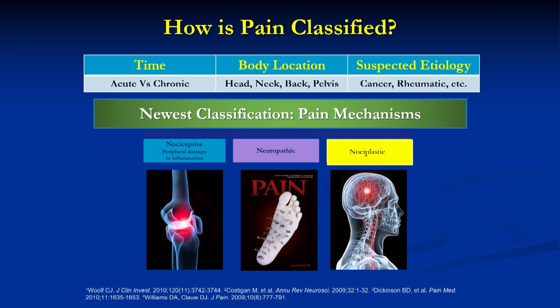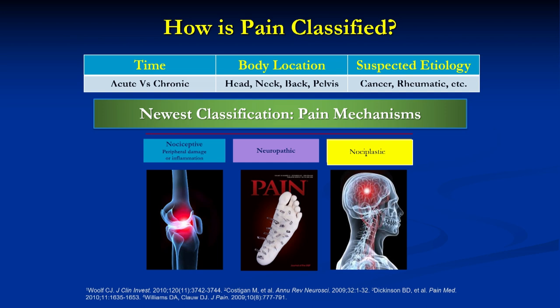Sometimes we classify pain by time — either acute or chronic. Sometimes we classify it by body location: is it head pain, back pain, knee pain, hip pain? — assuming the pain is different depending upon the body part. We've also classified it based on disease entities, so rheumatic pain, cancer pain, or sickle cell pain, assuming that pain differs by these different diseases.